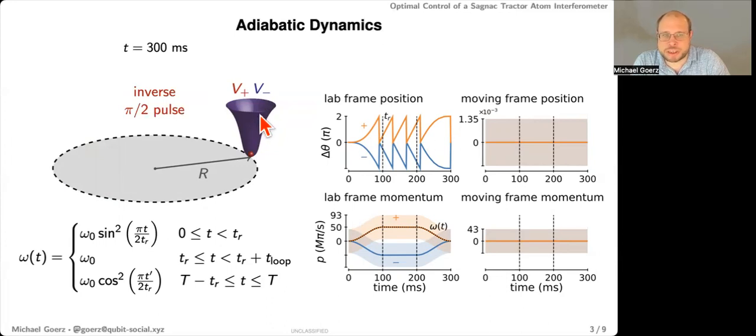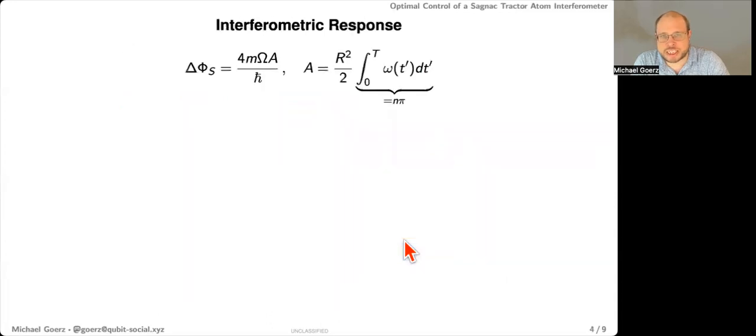So how does the background rotation show up in this recombination? Well, basically, when you have a background rotation, you'll get a relative phase between these two pathways. And you can estimate that semi-classically as the Sagnac phase, which depends on the interferometric area. So that's just the number of cycles here. And otherwise, it's just proportional to the background rotation.